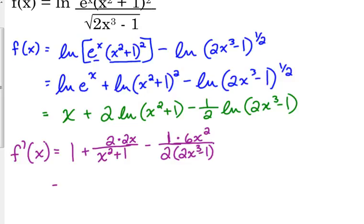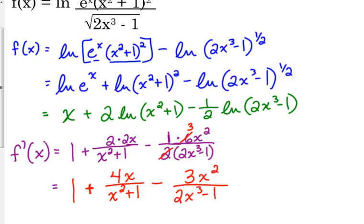Alright. So, probably I don't anticipate them doing a whole lot to simplify this. So, we've got 1 plus 4x over x squared plus 1 minus 6x, actually, 6 over 2. That can reduce to give us 3. 3x squared over 2x cubed minus 1. Honestly, that's probably all they're going to do.